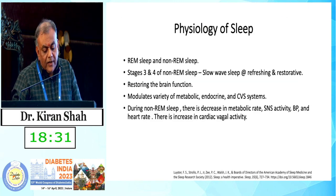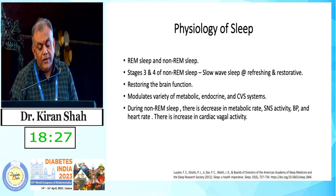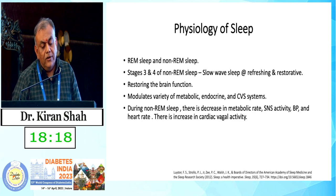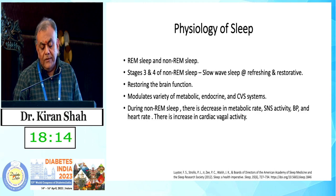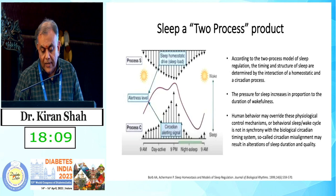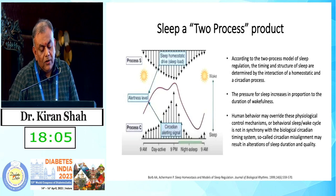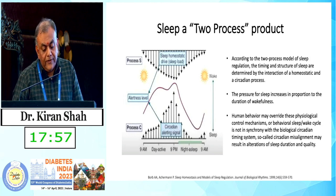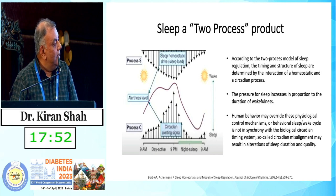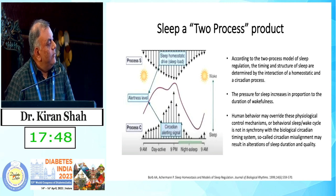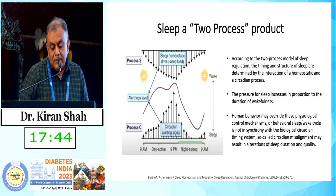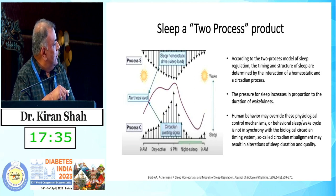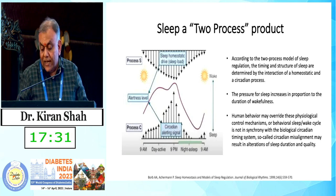Looking into the physiology of sleep, we have REM sleep and non-REM sleep. Stage 3 and stage 4 are considered restorative and refreshing. They help restore brain function and modulate a variety of metabolic, endocrine, and cardiovascular systems. During non-REM sleep, there is a decrease in metabolic rate, sympathetic nervous system activity, blood pressure, and pulse, and an increase in cardiac vagal activity. Sleep is a byproduct of two processes — process S (sleep homeostasis) and process C (the circadian component). The pressure for sleep increases in proportion to the duration of wakefulness. When the behavioral sleep-wake cycle is not in synchrony with the biological circadian timing system, circadian misalignment results in alterations of sleep duration and quality. There is also a dip in the circadian sine wave during the daytime corresponding to the siesta time.